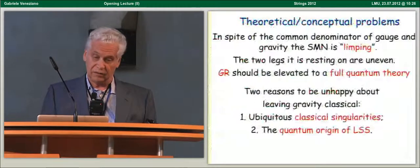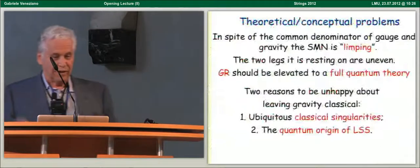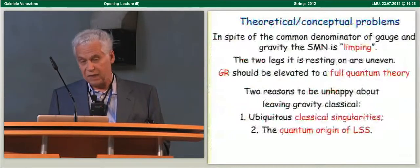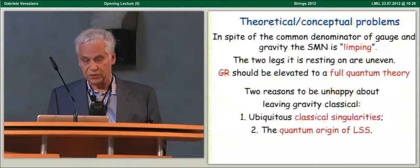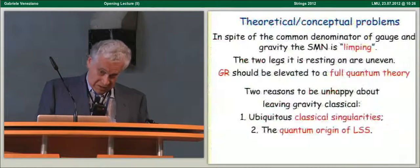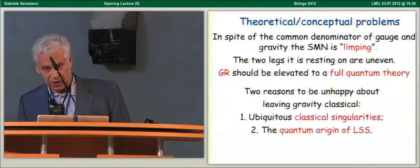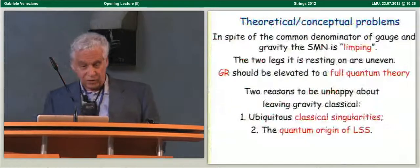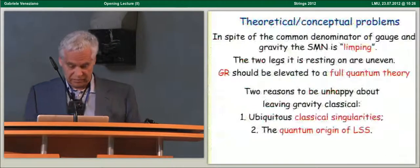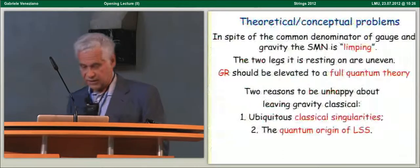And I don't need to remind this audience that the standard model of nature is limping. There are two legs. One is classical, one is quantum. And my opinion, two reasons for which GR should be elevated to a full quantum theory are the ubiquitous singularities of classical general relativity, which we would like to understand, and the quantum origin of large-scale structure that is the mechanism through which inflation provides structure in the universe.